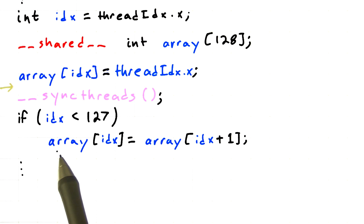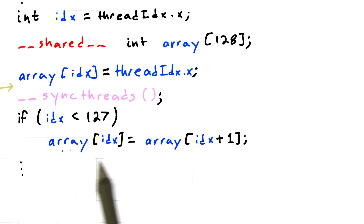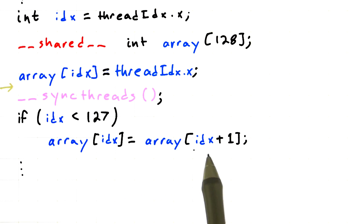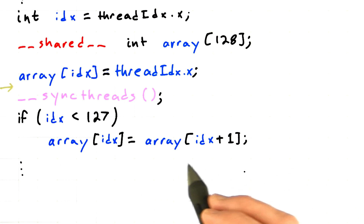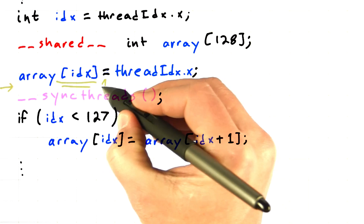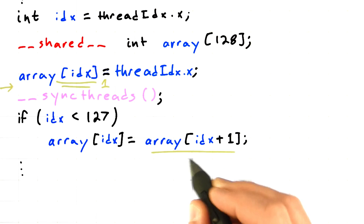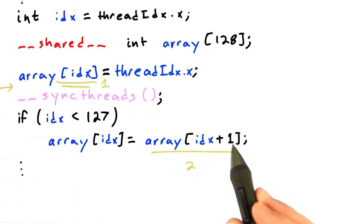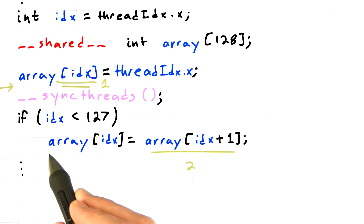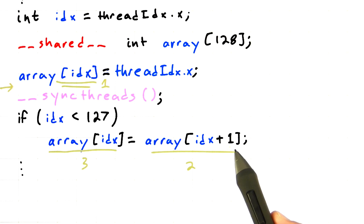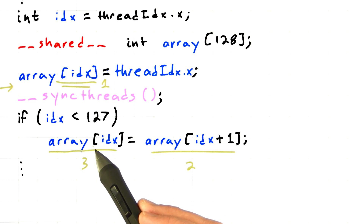And now all of the threads that pass this if statement are going to do this shift operation. They're going to set the array element at their index equal to the array element at their index plus 1. But if you think about it, this is really a read and a write operation. Here is our first write operation — that was number 1. And now we're doing a read operation — that's number 2. We're going to read from the array at index plus 1. And then finally we're going to write to the array at index — that's operation 3. And the tricky thing about this is that all of these reads should complete before we allow any of these writes to finish.